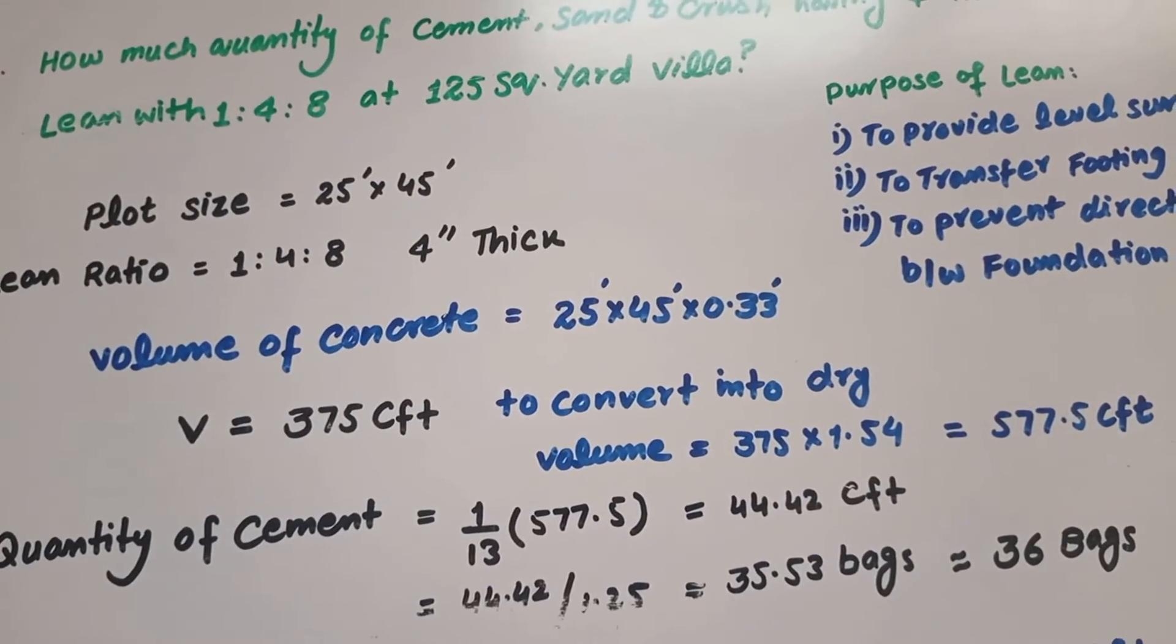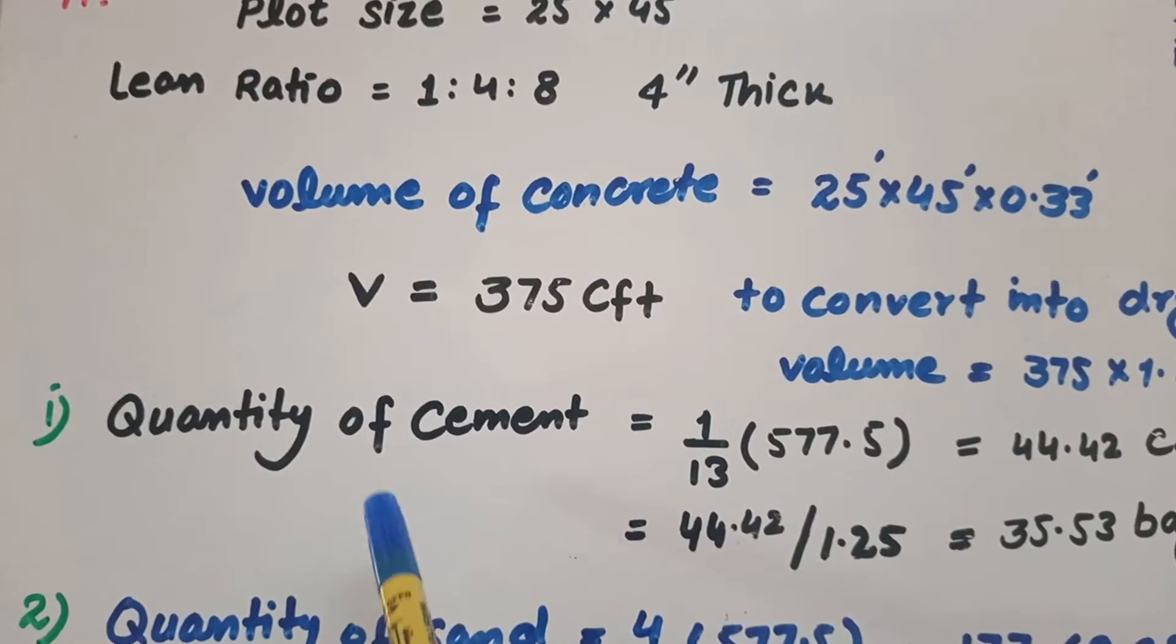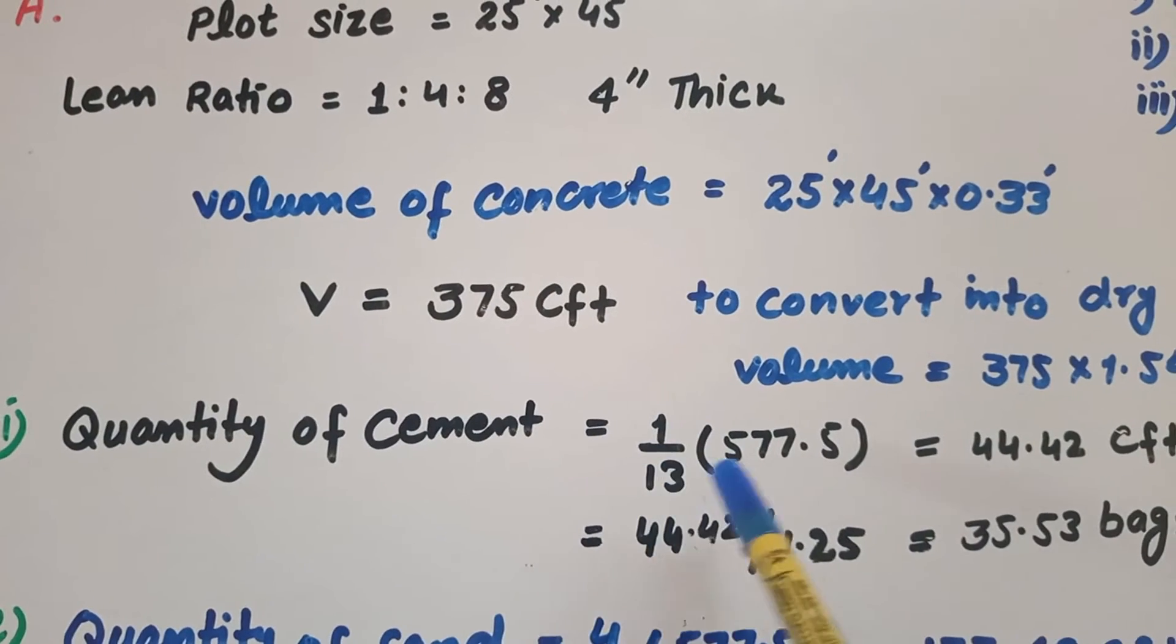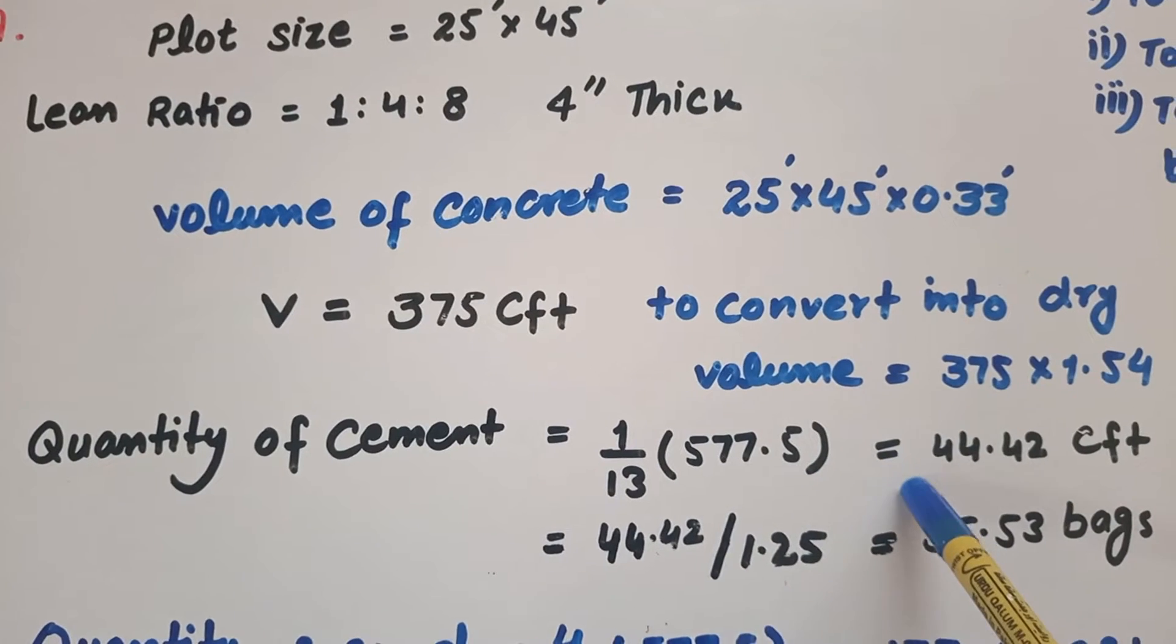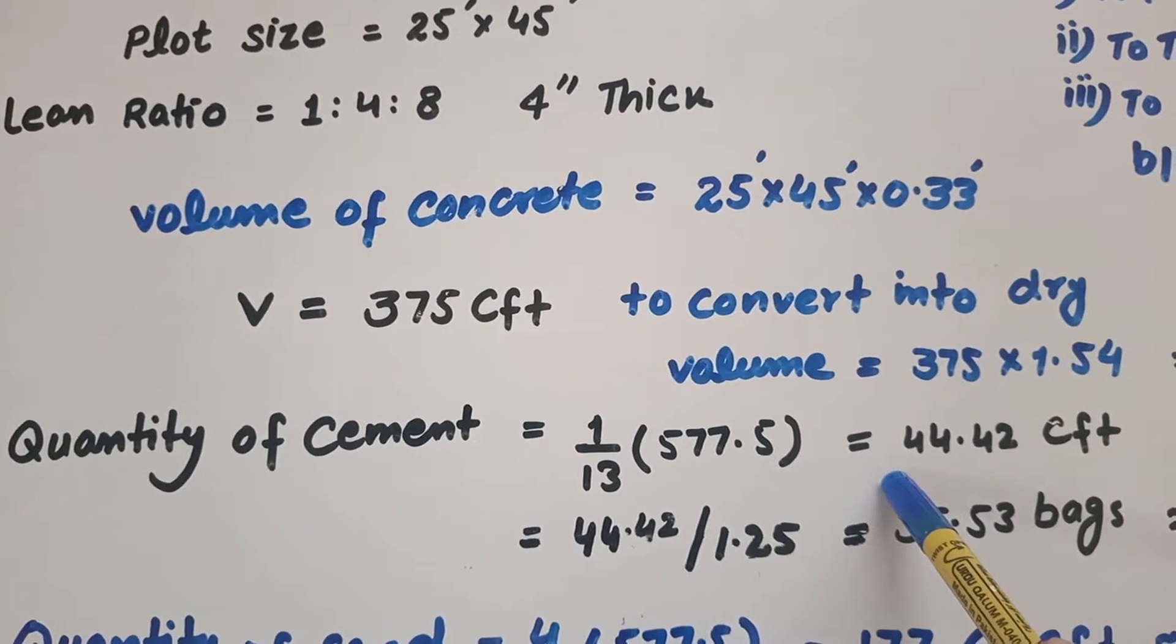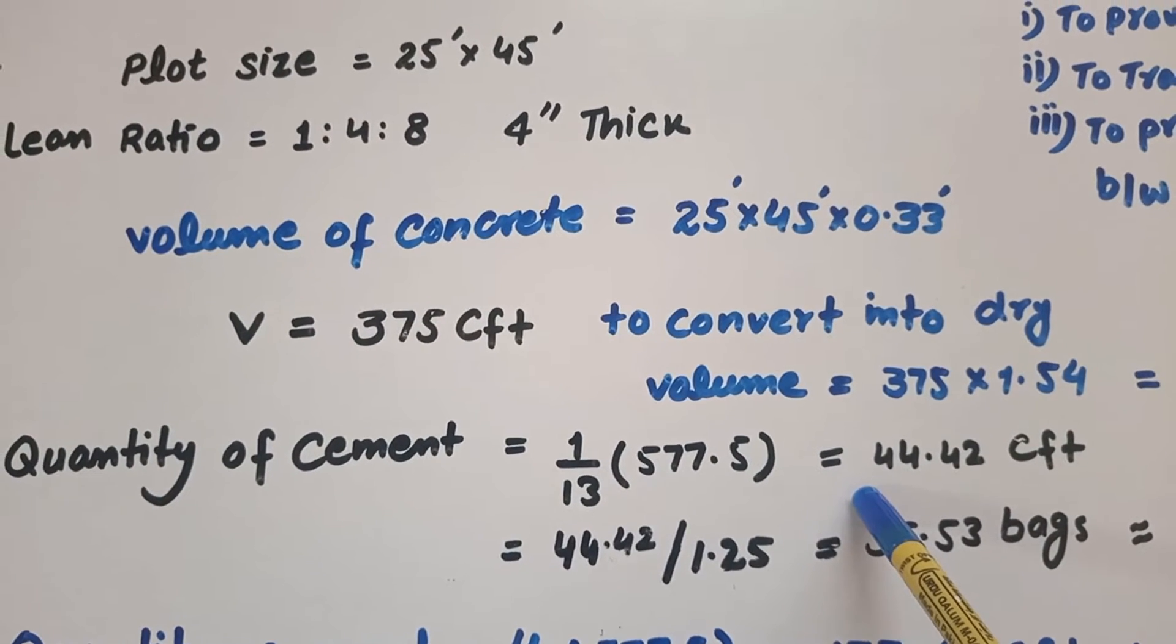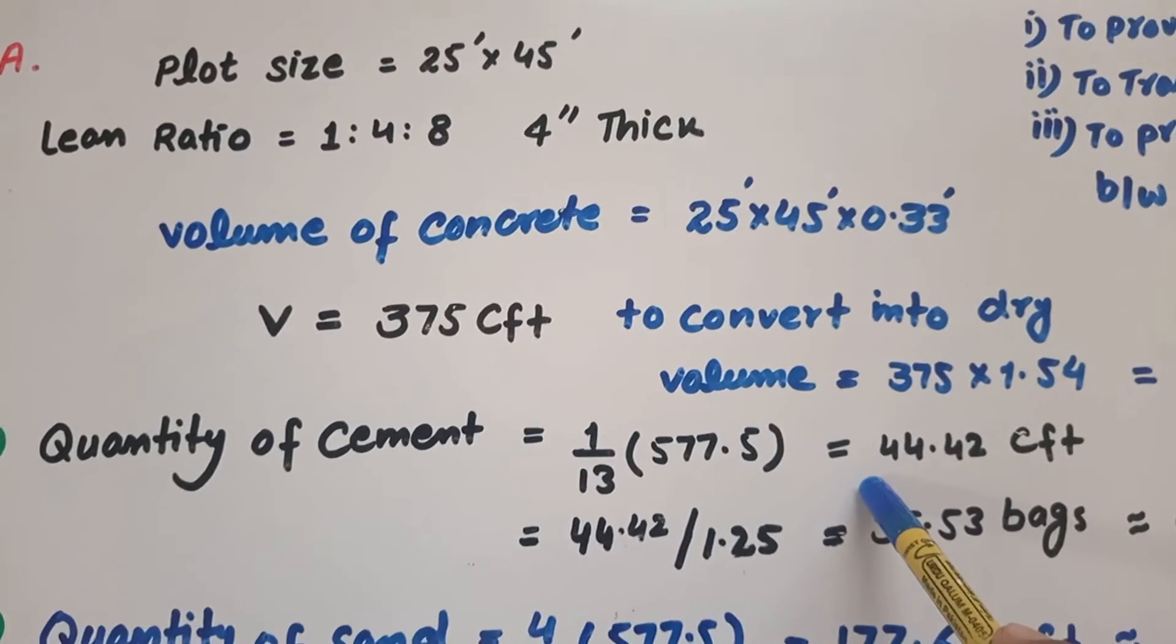Number one, quantity of cement: 1/13 × 577.5 = 44.42 cubic feet of cement used in 125 square yard villa.